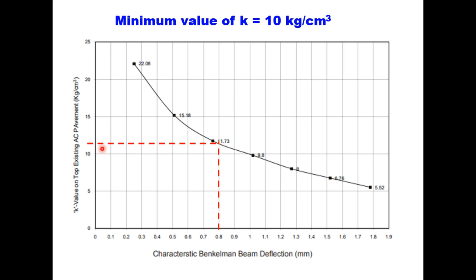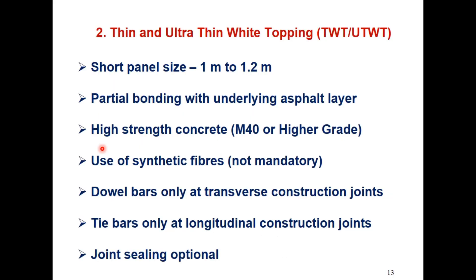Thin white topping and ultra-thin white topping are innovative designs that emerged in the last two to three decades. Their characteristics include short panel sizes ranging from 1 meter to 1.2 meter, up to 1.5 meter. There is partial bonding with the underlying asphalt layer. High-strength concrete of M40 or higher grade is used, and sometimes synthetic fibers are added to reduce plastic shrinkage cracks. Dowel bars are used only at transverse construction joints and tie bars only at longitudinal construction joints. Joint sealing is not mandatory.